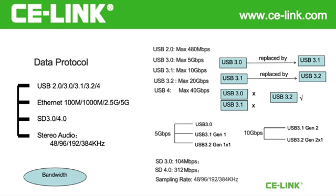Data transfer rate is usually measured by bandwidth. Higher the bandwidth, faster the data transfer. There are different versions of USB. For USB 2.0, maximum bandwidth is 480 MB per second.